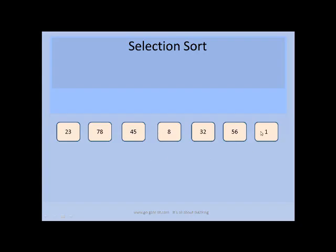For example, 1 is the smallest element of this sequence, so it will be placed at the first position. To make selection sort work properly, we need an element which will keep track of the minimum element in every iteration.